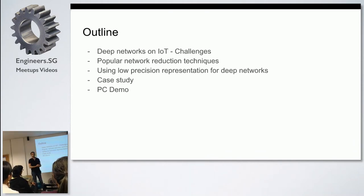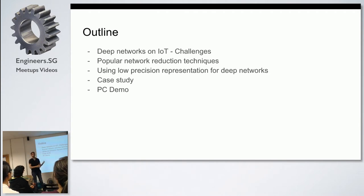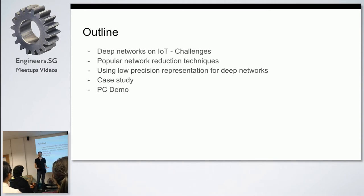Deep learning is a kind of a trending buzzword these days. It is just a series of computations like filtering — image processing, image filters and all. It is a series of those kinds of computations, and at the end of the network you have either classification or detection of faces or objects. You can consider it as a series of computations for computer vision applications like detecting a person, detecting a car, self-driving, all that stuff.